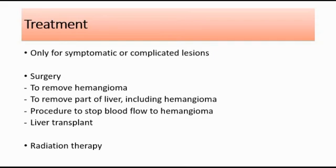Surgery can also be done to perform a liver transplant. This is for the unlikely event that you have a very large hemangioma or multiple hemangiomas that can't be treated by other treatments — the doctor may recommend removing your liver and replacing it with a liver from a donor. Lastly, radiation therapy uses powerful energy beams such as X-rays to damage the cells of the hemangioma, but this is rarely used because of the availability of other safer and more effective treatments.